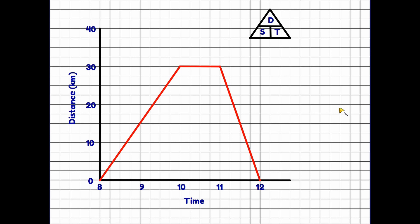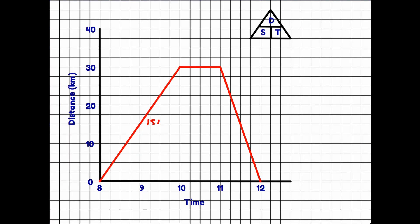Now the graph is complete, we can use it to extract information. Distance, speed, and time are the three things shown in a graph like this, and when we talk about speed we mean average speed. For the outward journey we traveled for two hours and covered 30 kilometers. Using the distance-speed-time triangle, speed equals distance divided by time: 30 divided by 2 gives us an average speed of 15 kilometers per hour.